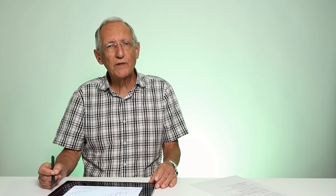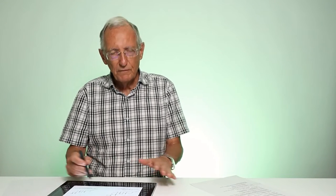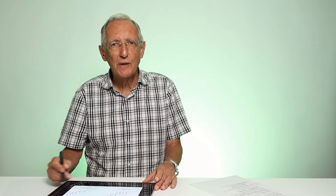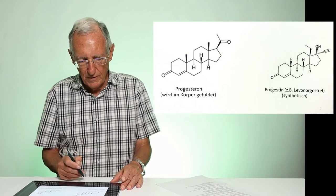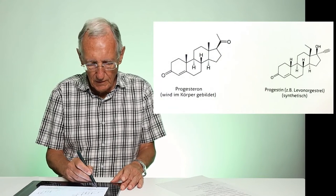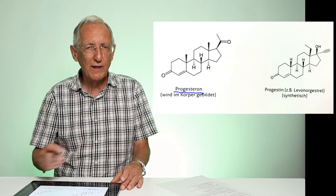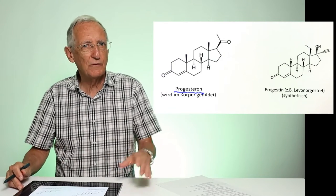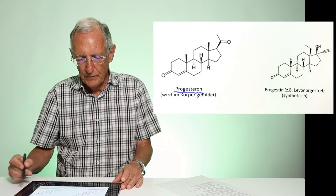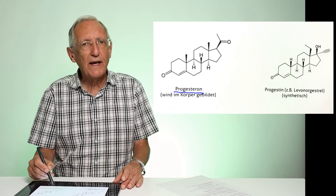Here we have the natural progesterone that you produce in your body. Men and women produce that. Now, if you compare that to a chemical progesterone, it looks the same at first glance. It consists of four benzene rings. That is the whole part right here. It's practically all the same for both.